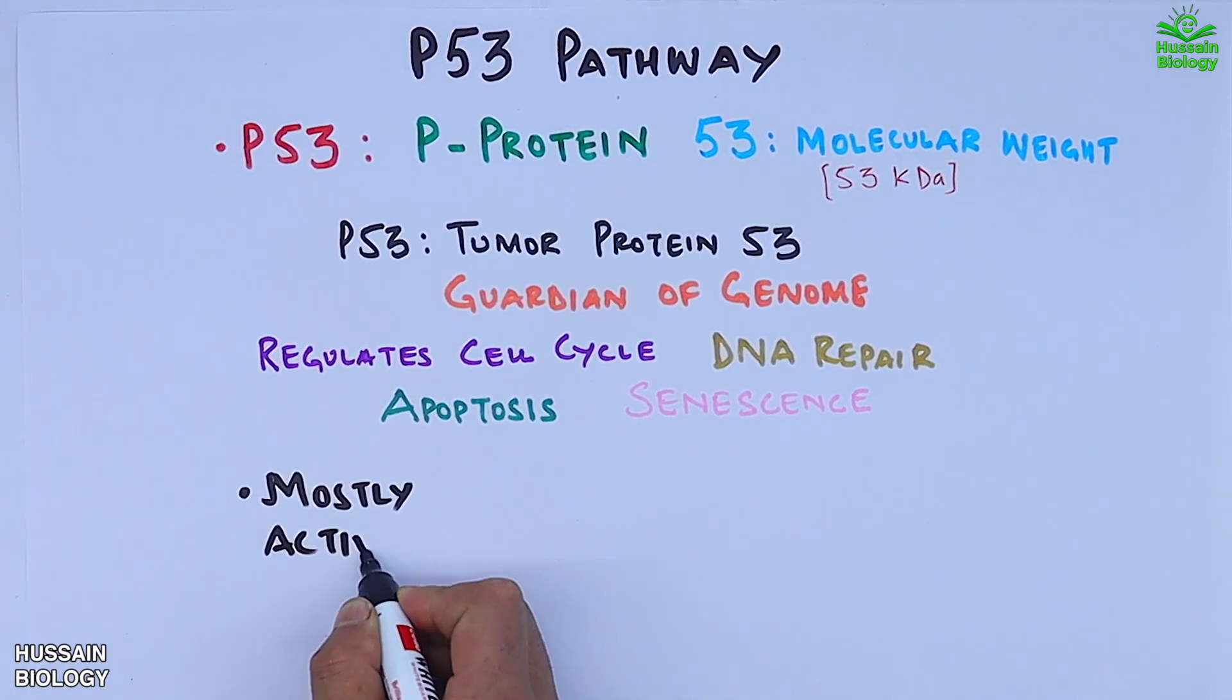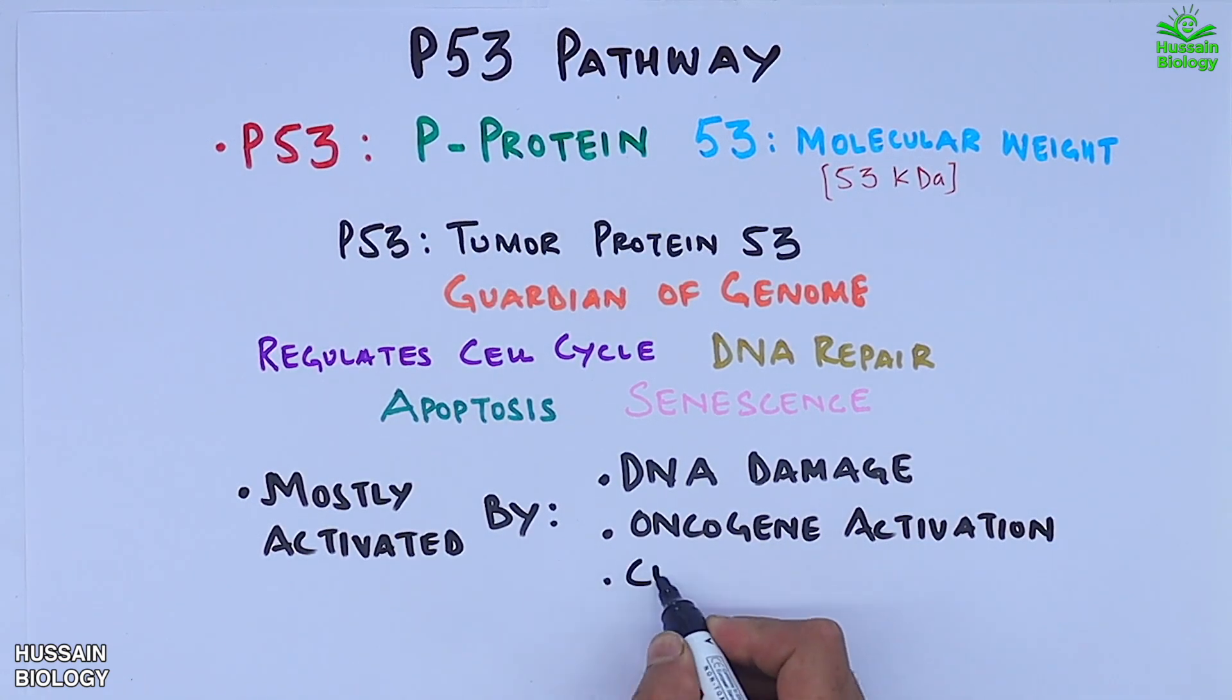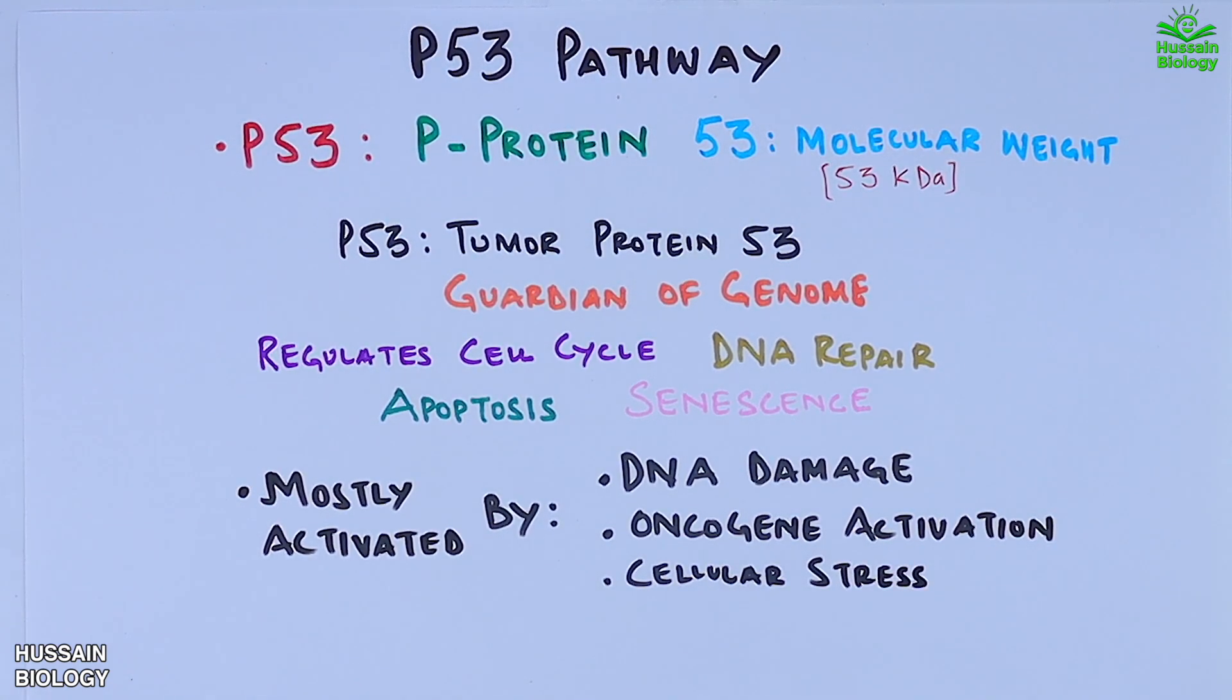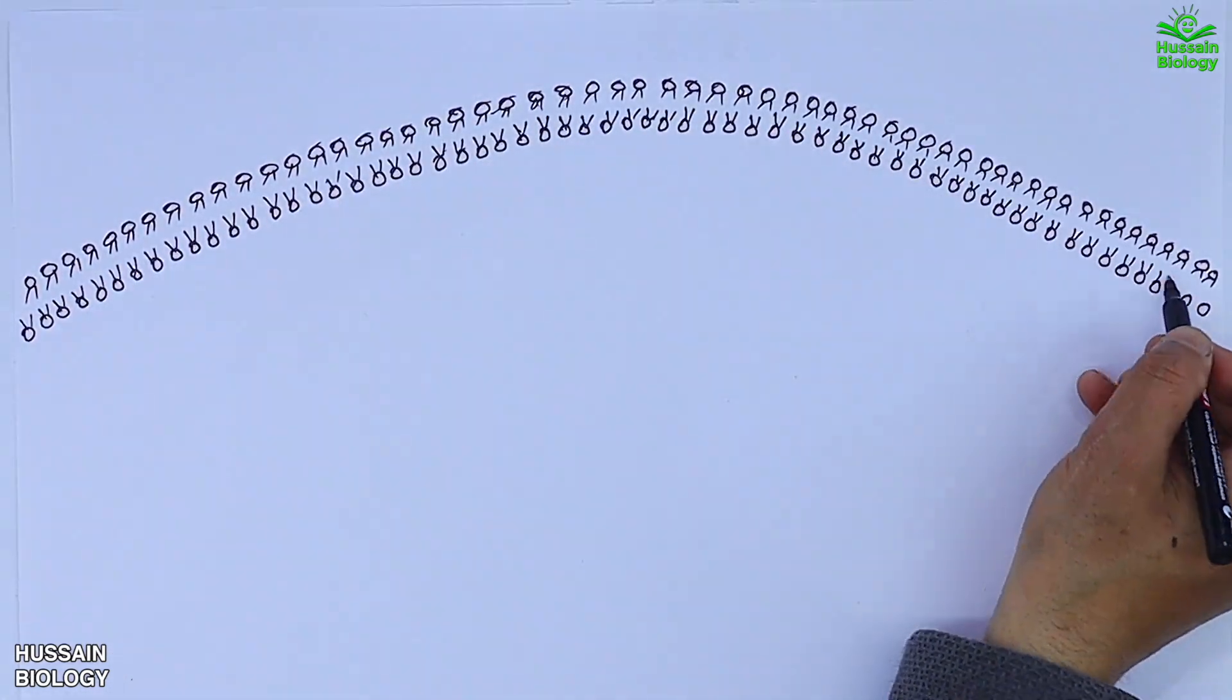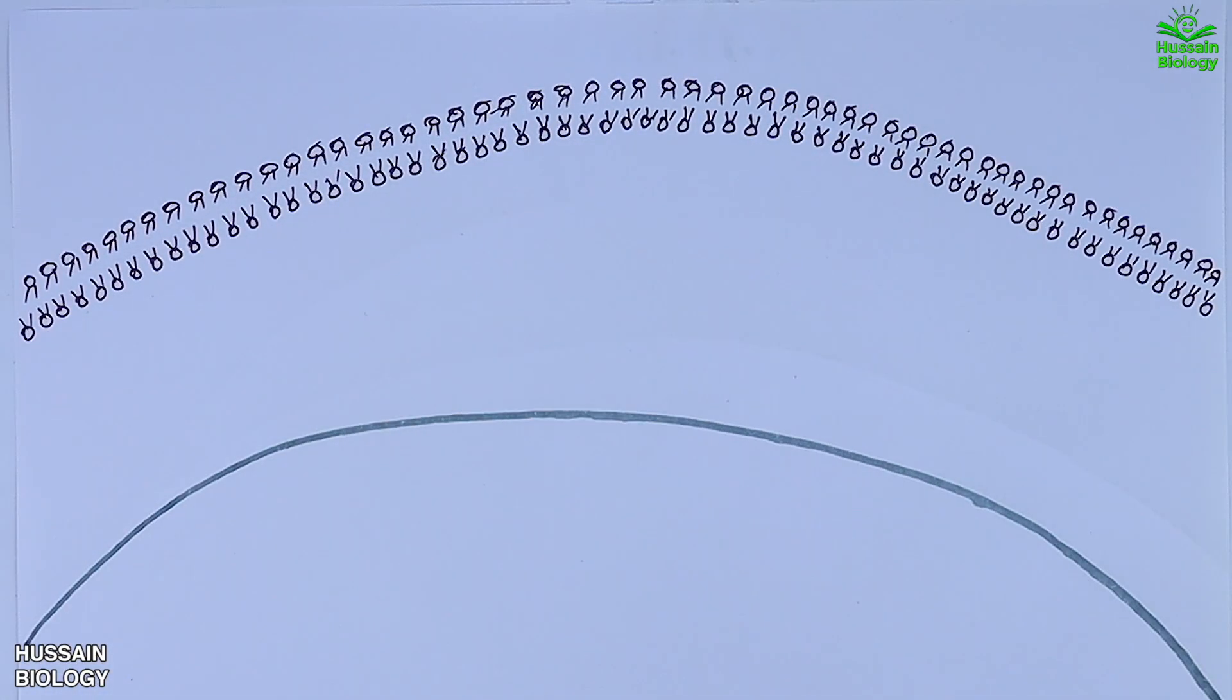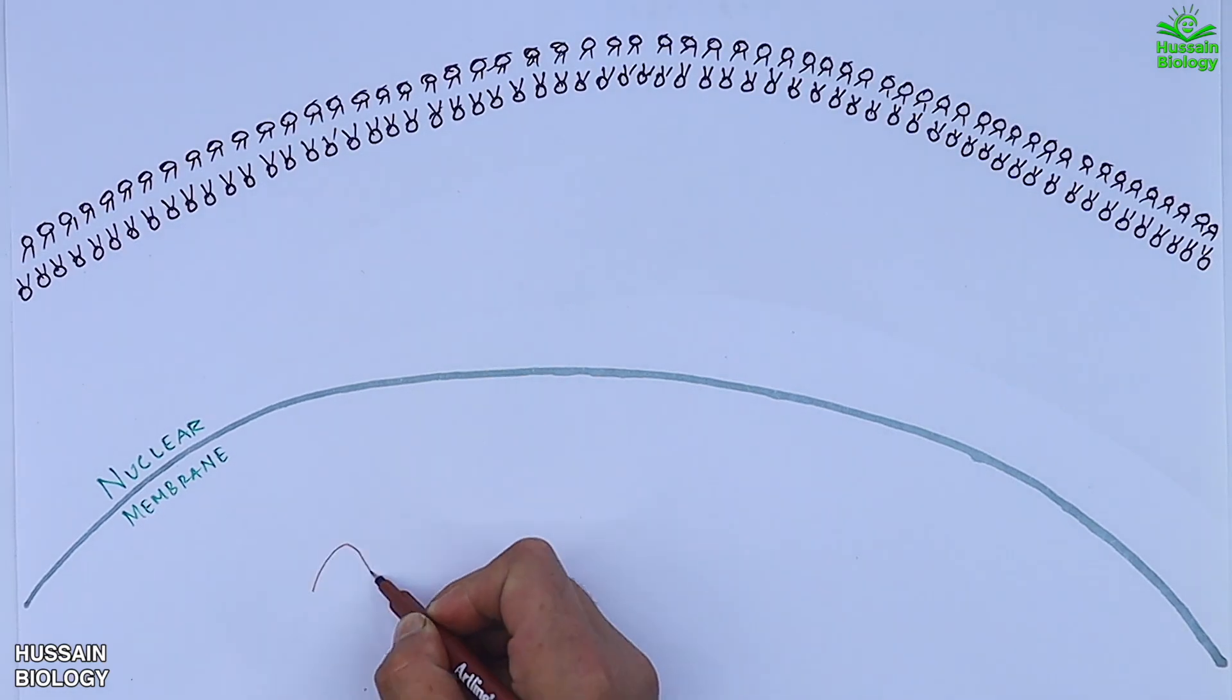It's mostly activated by DNA damage, oncogene activation, and cellular stress. Now let's see the p53 pathway in detail. Here in this diagram we have the cell membrane and inside it we have the nucleus having DNA in it.